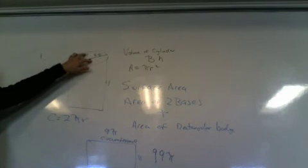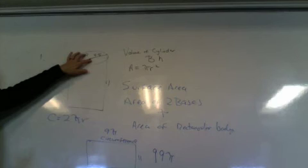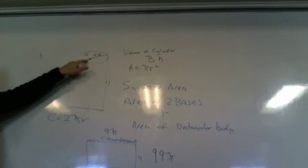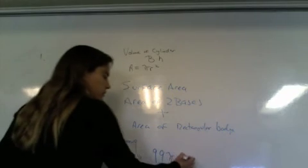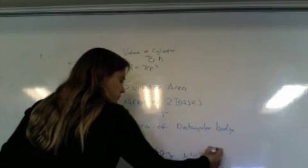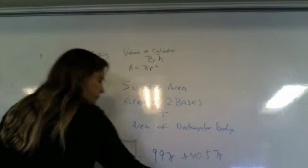Now we just need to add the area of the two bases. We already solved for the area of the base for the first problem, right? Yeah. So what was that? 20.25π? So 40.5π? Yeah. Where did you get 99π? Well, that's 139π. I'll be right back.